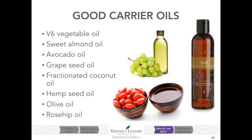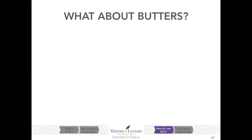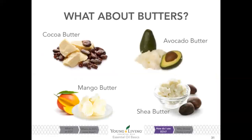They call it V-6 because it has six different vegetable oils in it. Carrier oils ensure that essential oils applied topically are comfortable to the skin — look for dilution ratios on Young Living essential oil bottles. Plant-based butters are also a great option when wanting to dilute your essential oils, and they have many additional benefits for your skin.